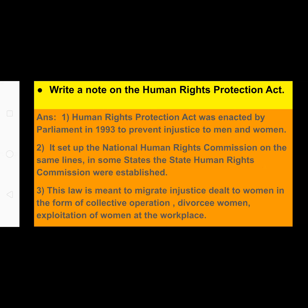Next question carrying three marks: write a note on the Human Rights Protection Act. The Human Rights Protection Act was enacted by Parliament in 1993 to prevent injustice to men and women. It set up the National Human Rights Commission, and on similar lines state human rights commissions were established. This law is meant to mitigate injustice to women in the form of collective oppression, divorce, exploitation of women at the workplace.